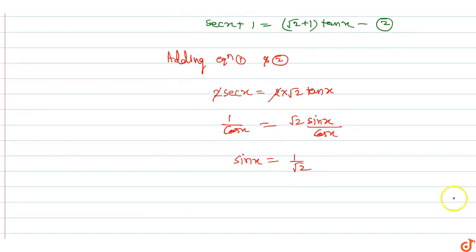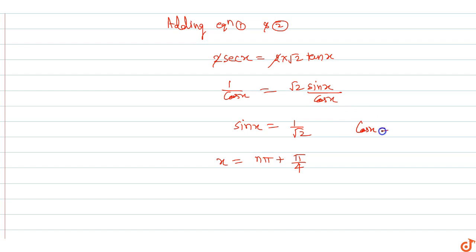X equals, the general solution equals n pi plus pi by four. Or cos x equals one, so x equals two n pi.